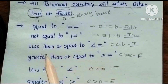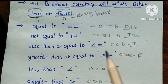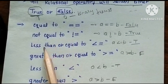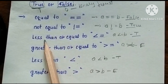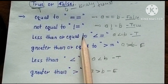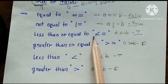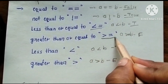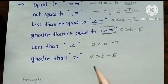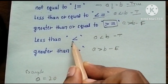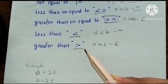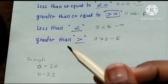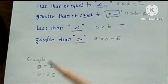The relational operator symbols are: equal to, not equal to, less than or equal to, greater than or equal to, less than, and greater than. These are the symbols used.